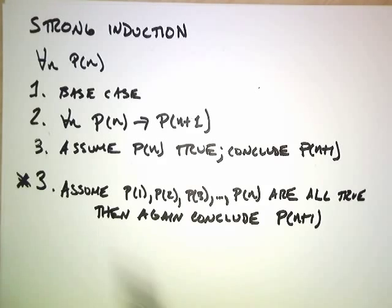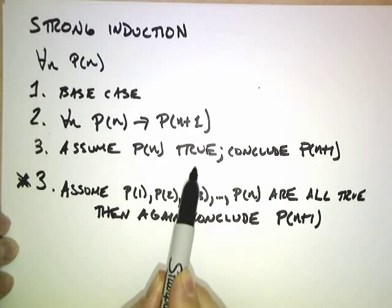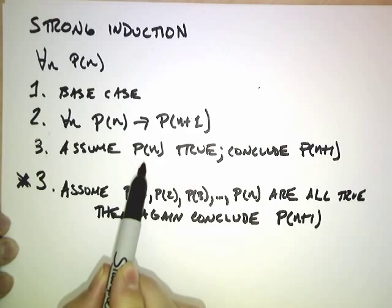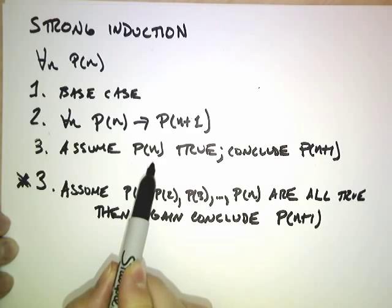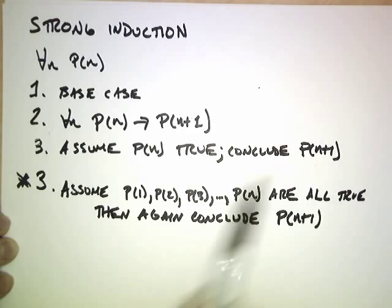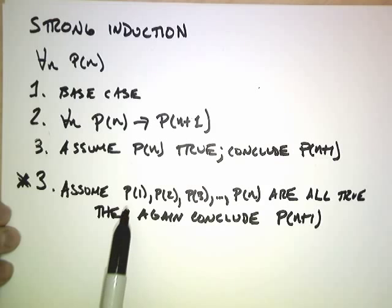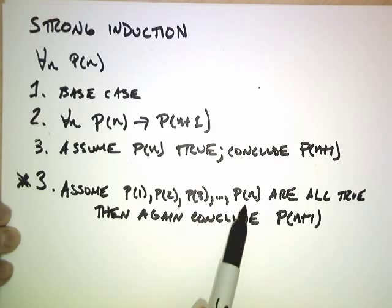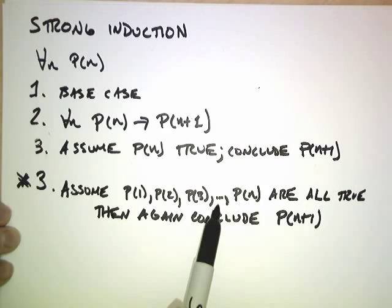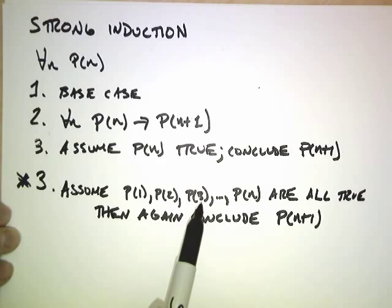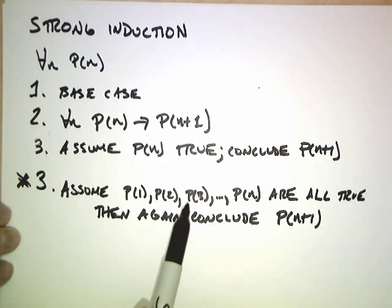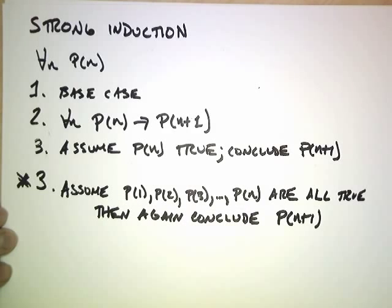So it's like I'm making things easier on you. Previously, we were doing inductive proofs where you always assumed that p of n was true and wanted to show that implied p of n plus 1. It turns out it's legal to assume that not only is p of n true, but also p of n minus 1, p of n minus 2, p of 3, p of 2, p of 1 — all the way down back through whatever your base case is.